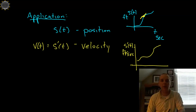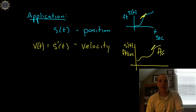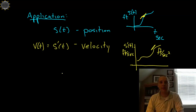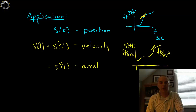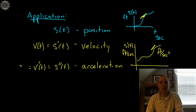Now what does that sound like? Hopefully you said feet per second squared. And if you know anything about basic physics, that gives you acceleration — feet per second squared. So if you took the second derivative of position, it would give you acceleration. Another way to say that is the first derivative of velocity, or you could just call it a of t.